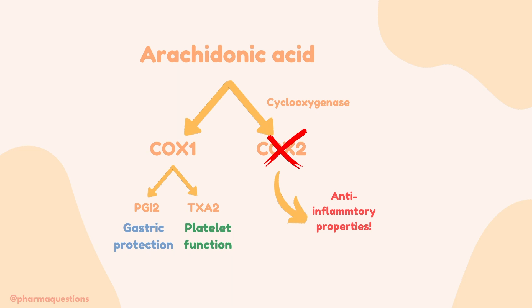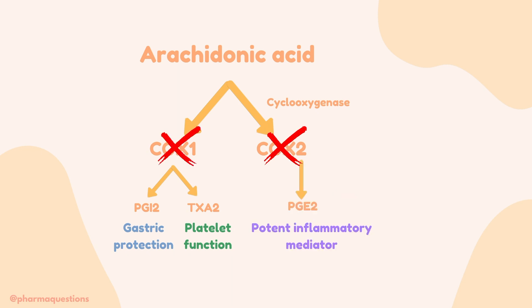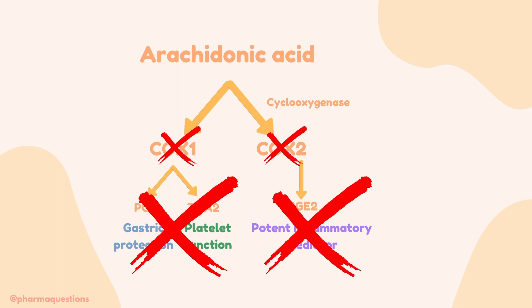However, NSAIDs work by inhibiting both COX1 and COX2, and this is where a lot of the adverse effects arise from, as protective factors such as prostaglandin I2 are also inhibited, leading to GI bleeds and haemorrhages.